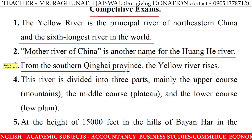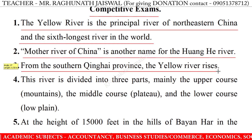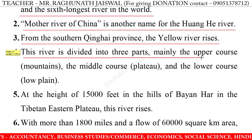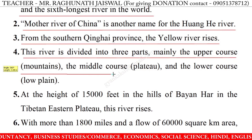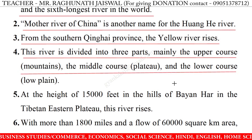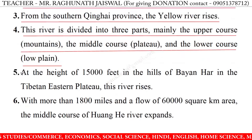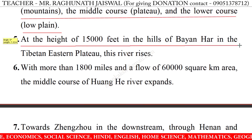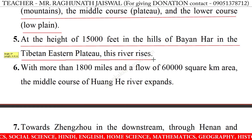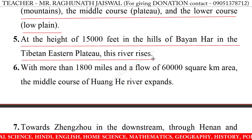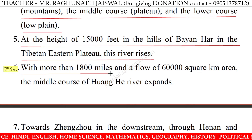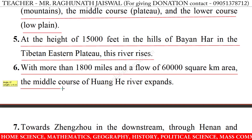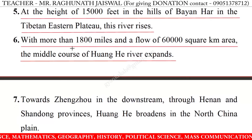13. From the southern Qinghai province, the Yellow River rises. 14. The river is divided into three parts: mainly the upper course (mountains), the middle course (plateau), and the lower course (low plain). 15. At the height of 15,000 feet in the hills of Bayan Har in the Tibetan Eastern Plateau, this river rises. 16. With more than 1,800 miles and a flow over 60,000 square kilometer area, the middle course of the Huanghe River expands.